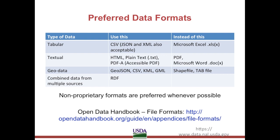In the grand scheme of things, providing data in a proprietary or non-machine-readable format is better than not providing it at all, but there are steps we can take when processing data for sharing or producing new data to make it more machine-readable and stable. The method and format you choose depends on the type of data you are producing. For tabular data, such as strings of recorded observations, financial reports, and statistics, the preferred format is CSV, which stands for Comma Separated Value, though JSON and XML may also be acceptable.